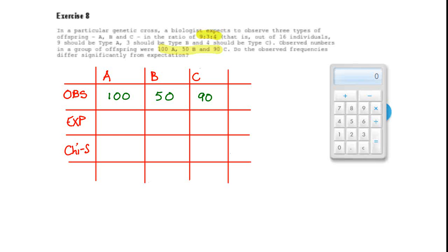I've written out the results here. In total we have 240 individuals, and we're expecting 9 sixteenths to be A, 3 sixteenths to be B, and 4 sixteenths to be C.